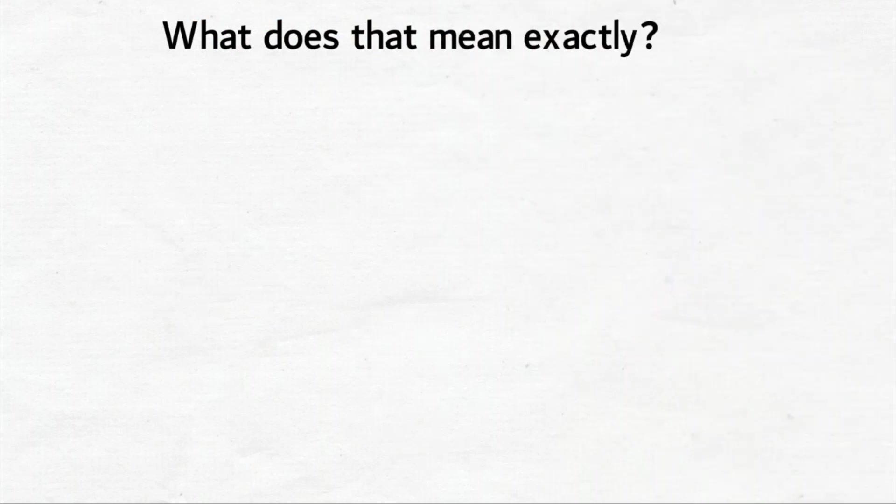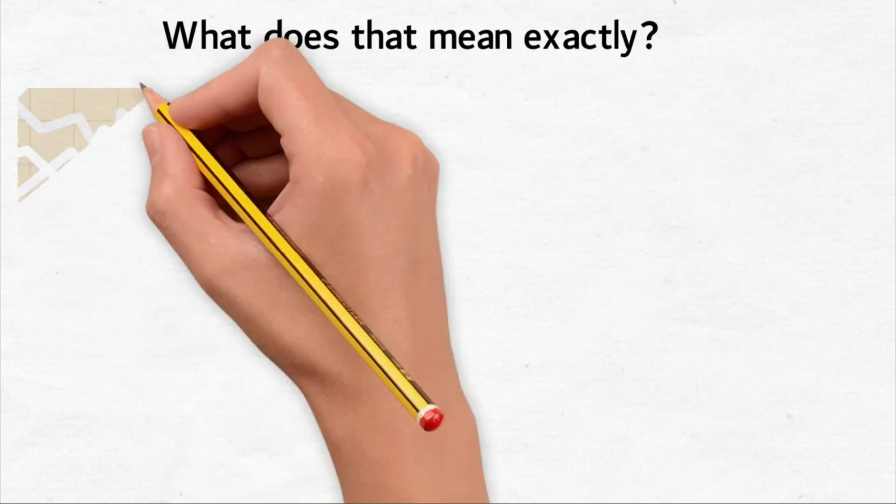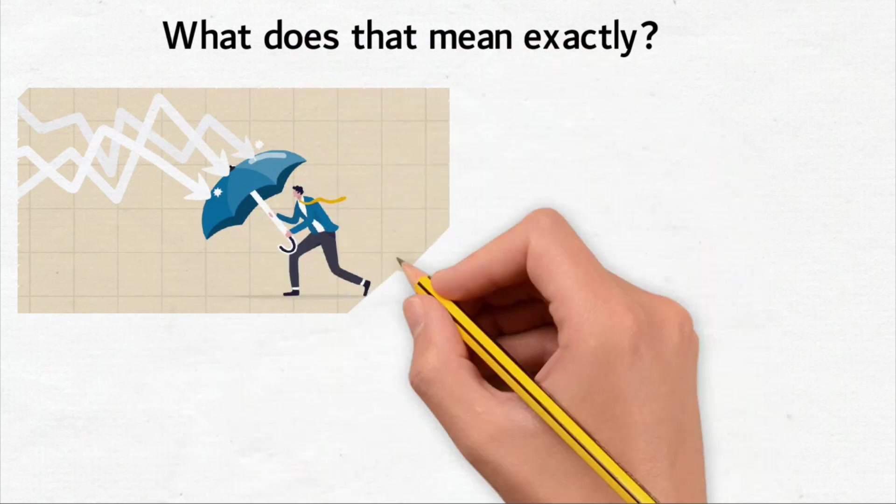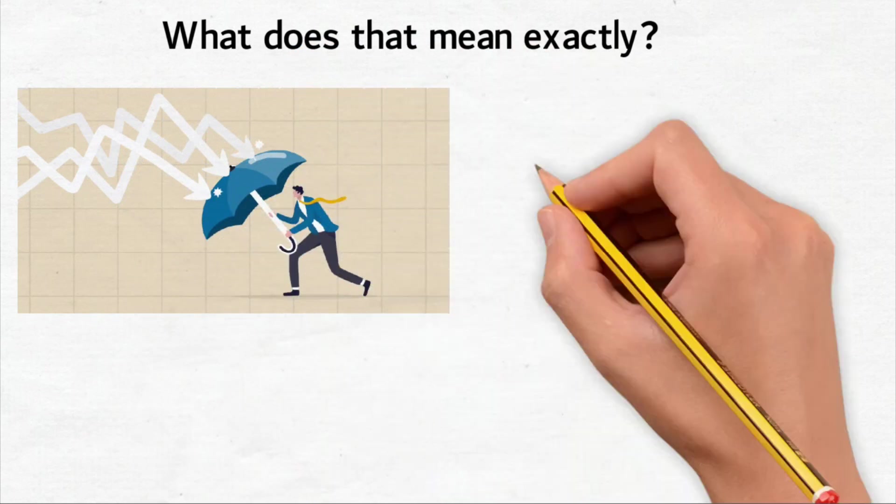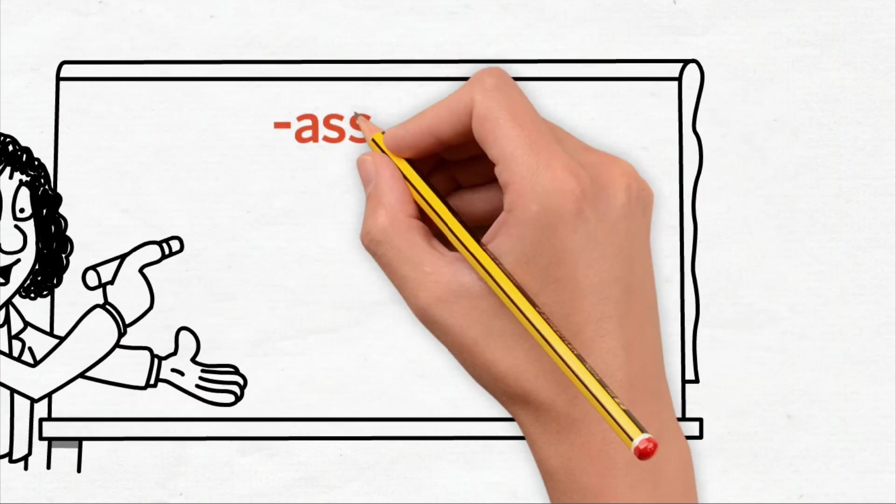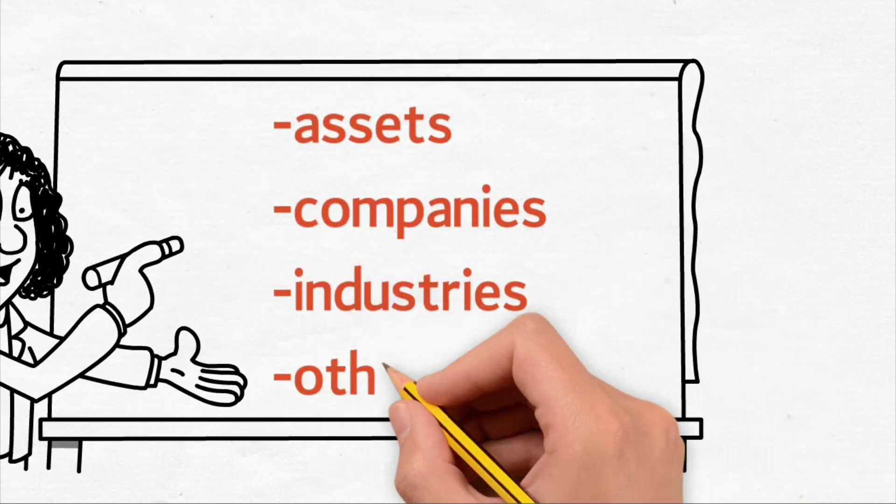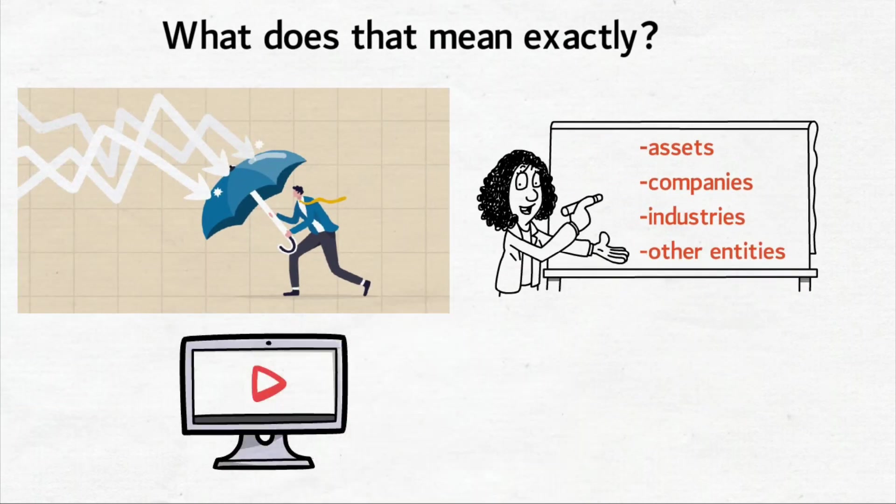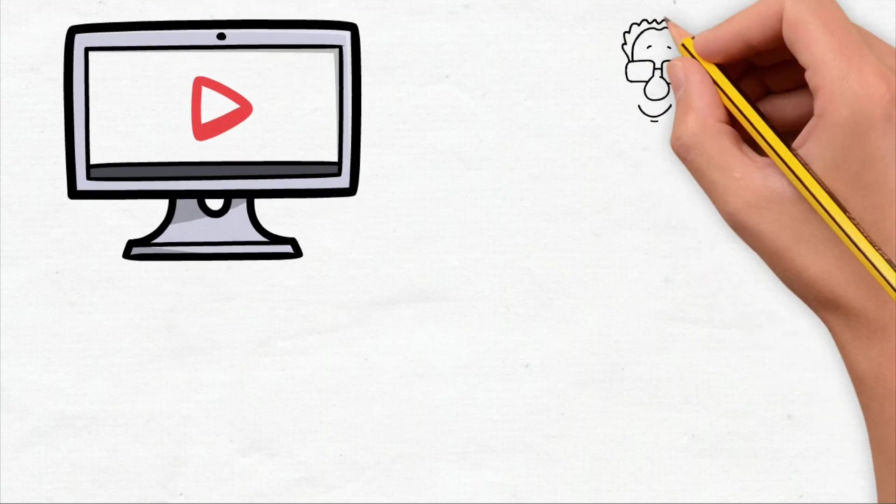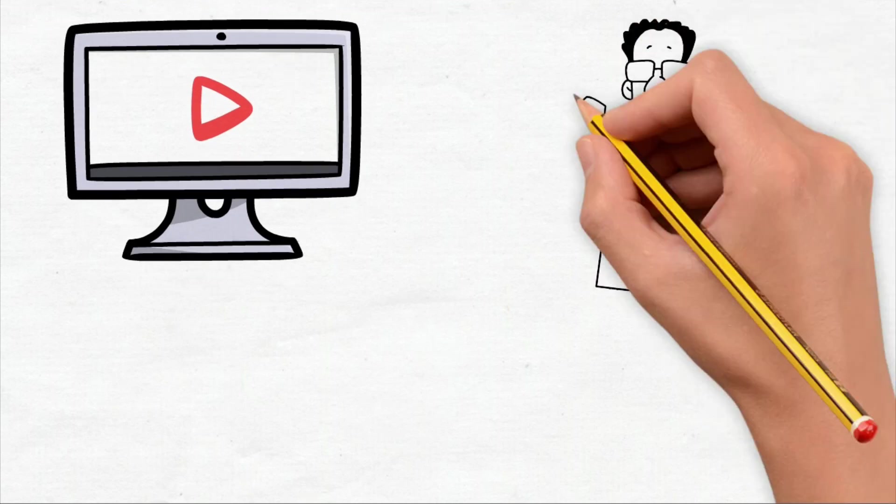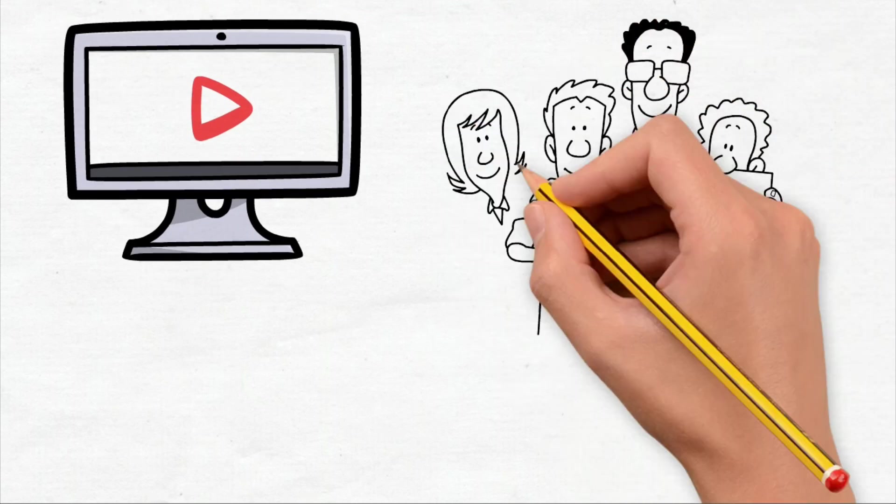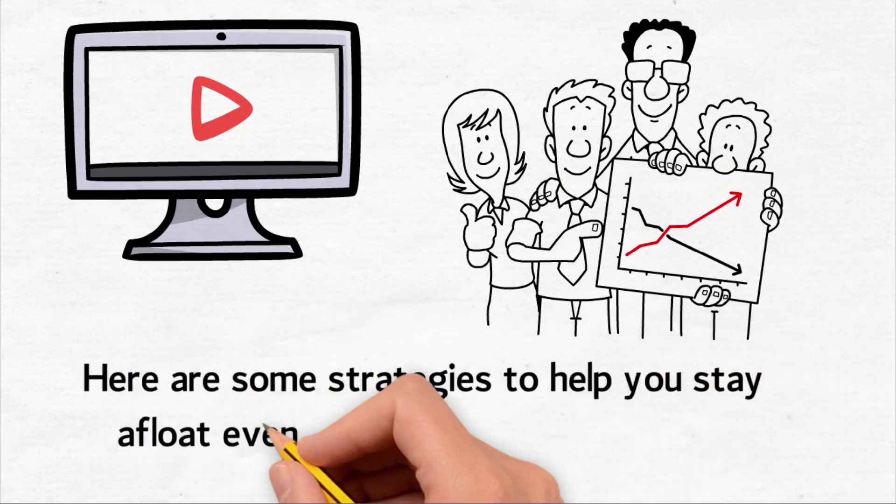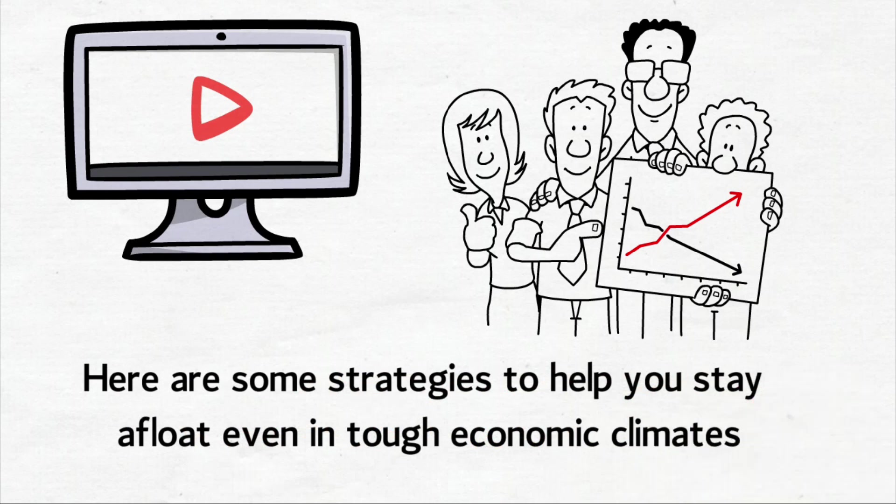What does that mean exactly? A recession is a widespread, consequential economic downturn that persists for months or longer. To be recession-proof simply means looking for ways to ensure that assets, companies, industries, or other entities do not decline in value during a recession. In this video, we will outline what you need to know to stay several steps ahead and minimize any damage in the event of a widespread financial contraction. Here are some strategies to help you stay afloat even in tough economic climates.